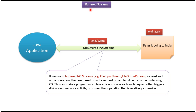In this video tutorial I will cover Buffered Streams. If you use unbuffered input-output streams, for example file input stream or file output stream, for read and write operations, then each read or write request is directly handled by the underlying operating system. This can make a program much less efficient, since each such request often triggers disk access, network activity, or some other operation that is relatively expensive.